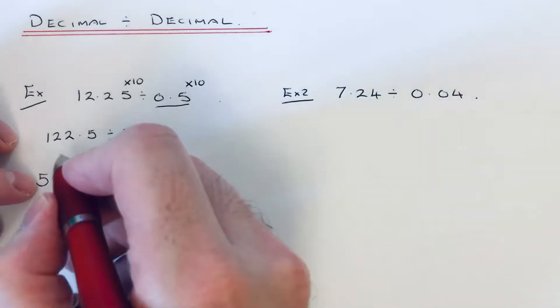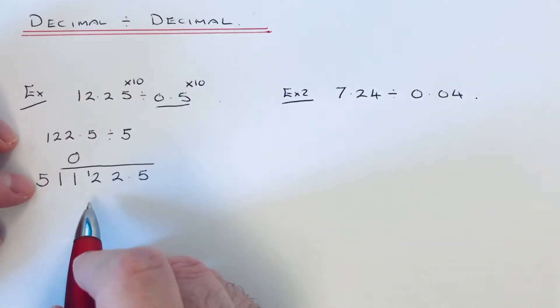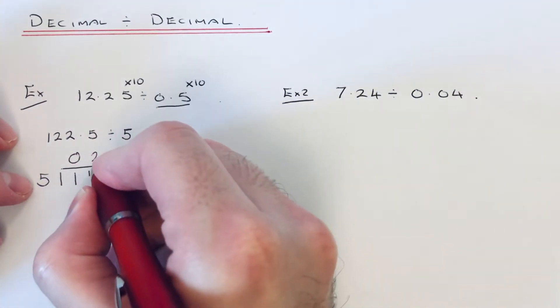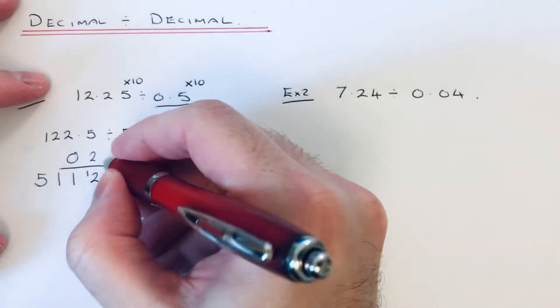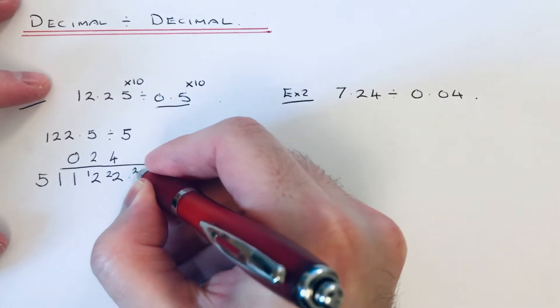So 1 divided by 5 is 0, remainder 1. 12 divided by 5 is 2, remainder 2. 22 divided by 5 is 4, remainder 2.